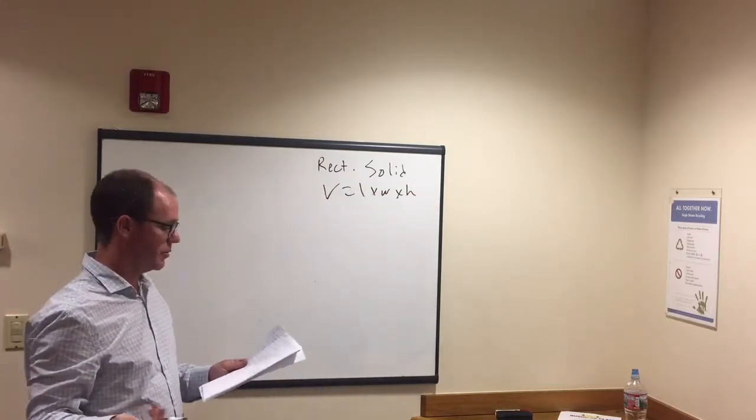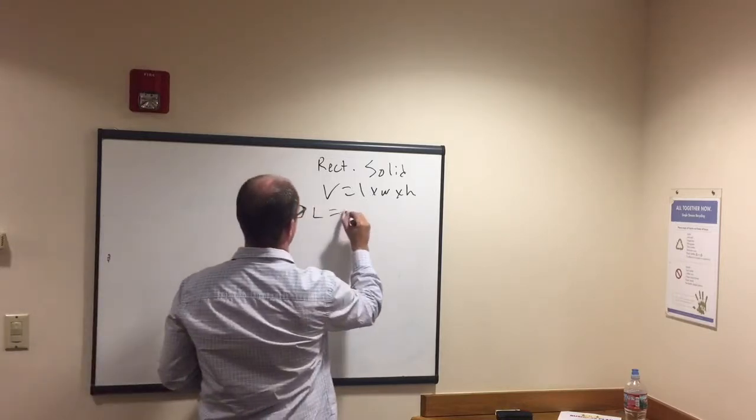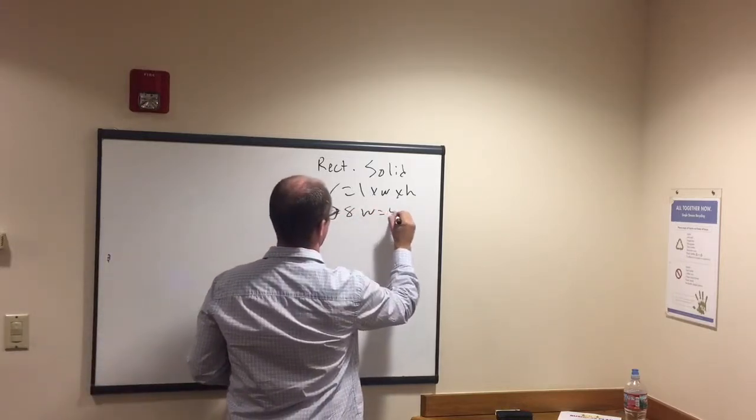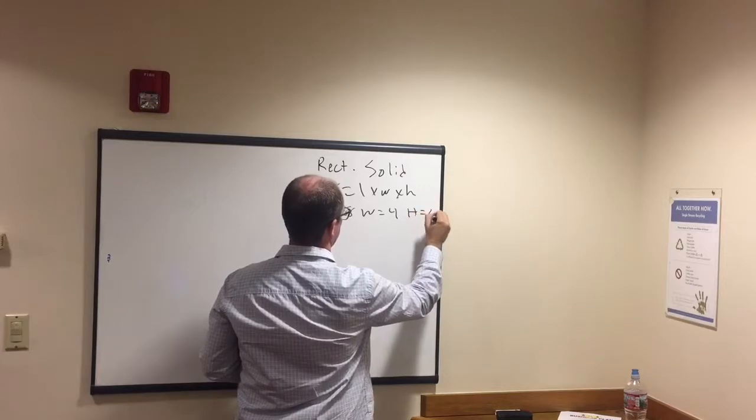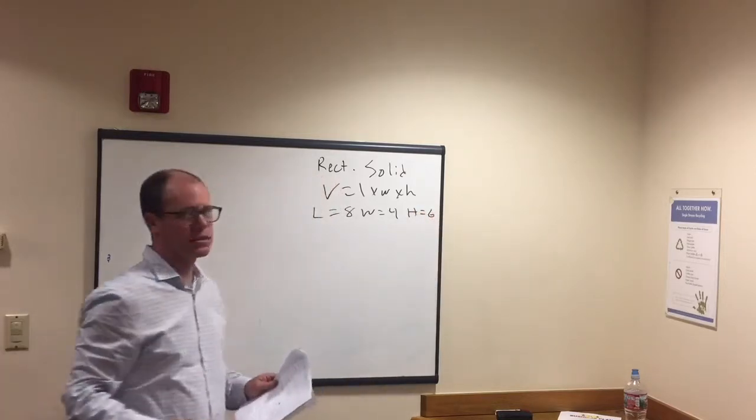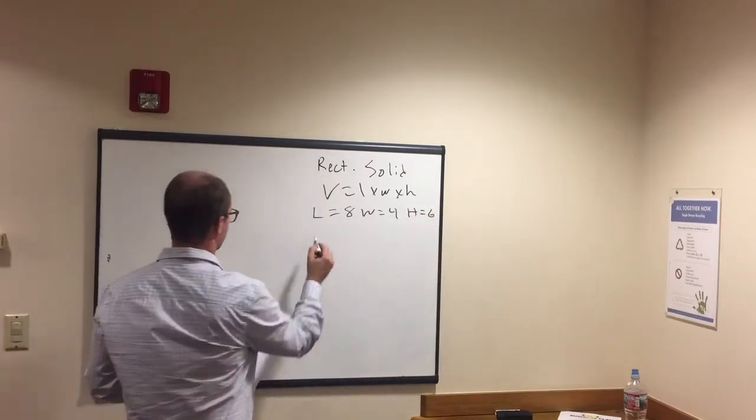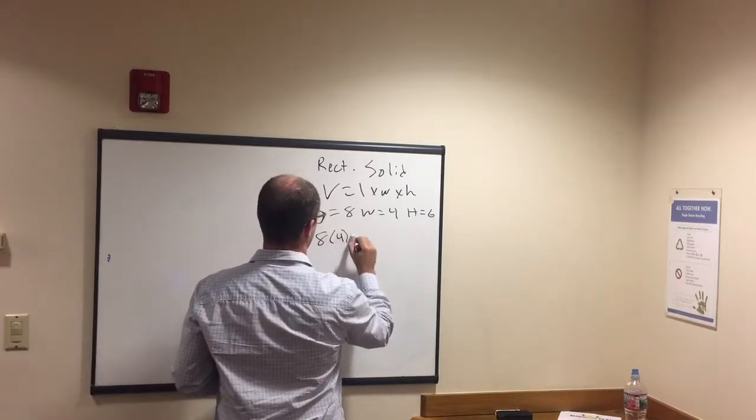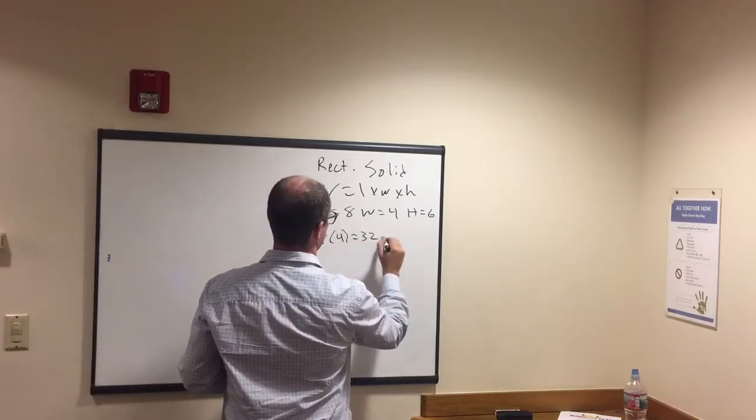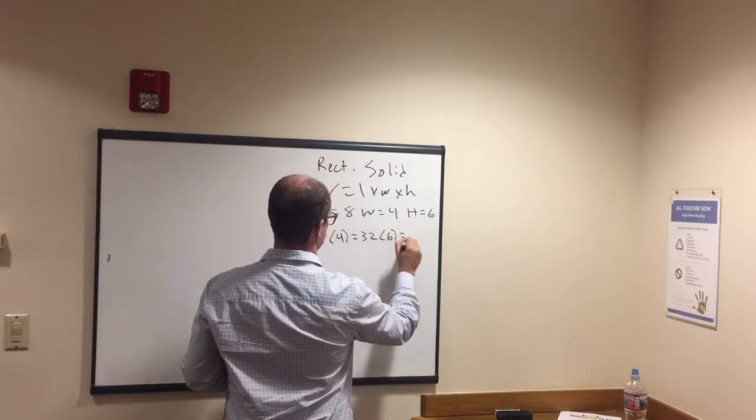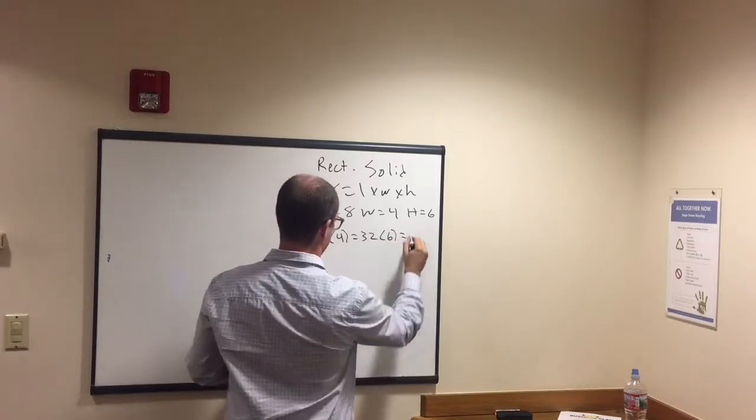As a quick example, say they say length 8, width 4, height 6, right? Then we just have to multiply them together. Pretty simple. 8 times 4 is 32 times 6, 192.